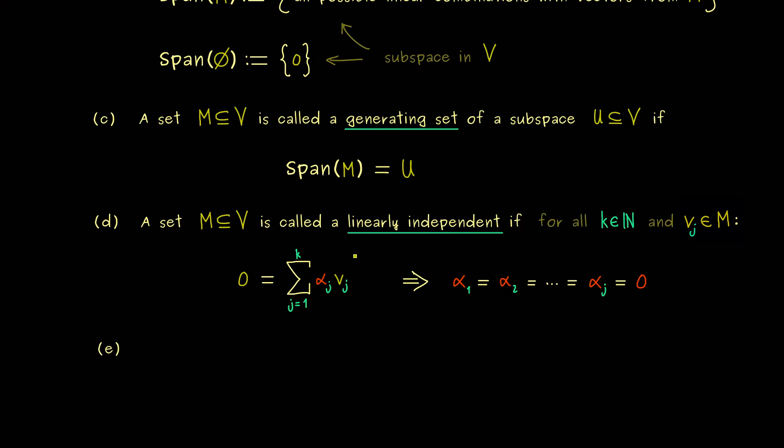Therefore you should see this generalizes the original definition of a linearly independent set. And now you might also remember, if we put both things together, the generating property and linear independence, then we get the notion of a basis.